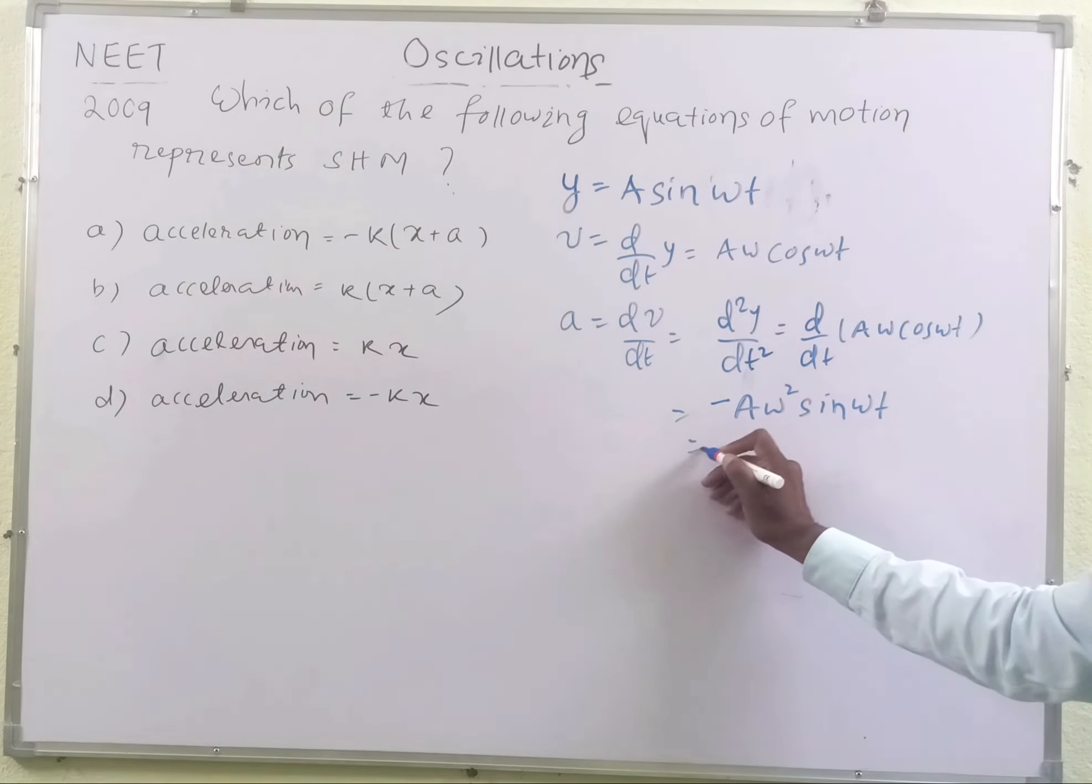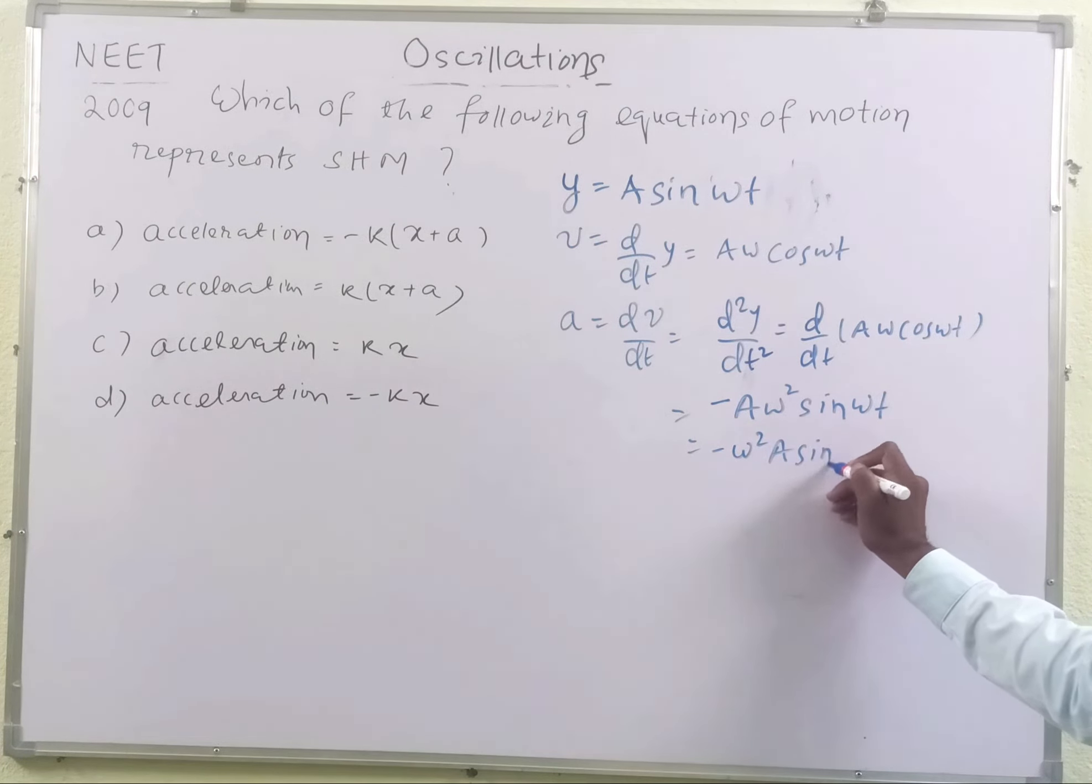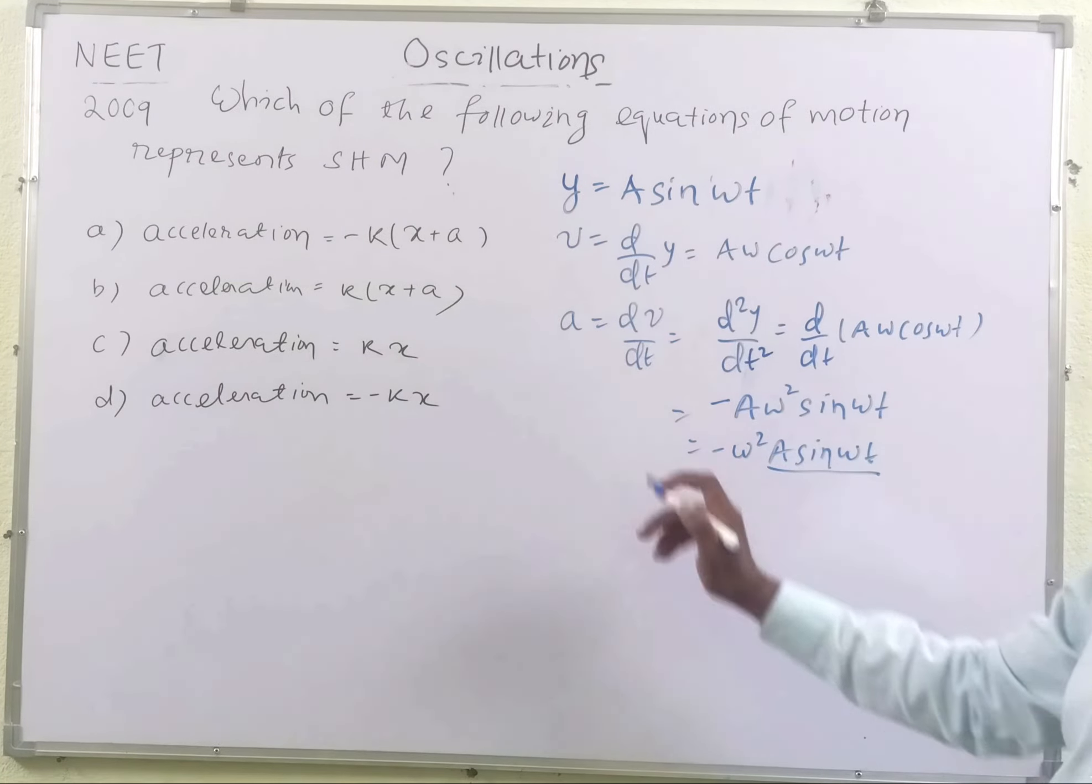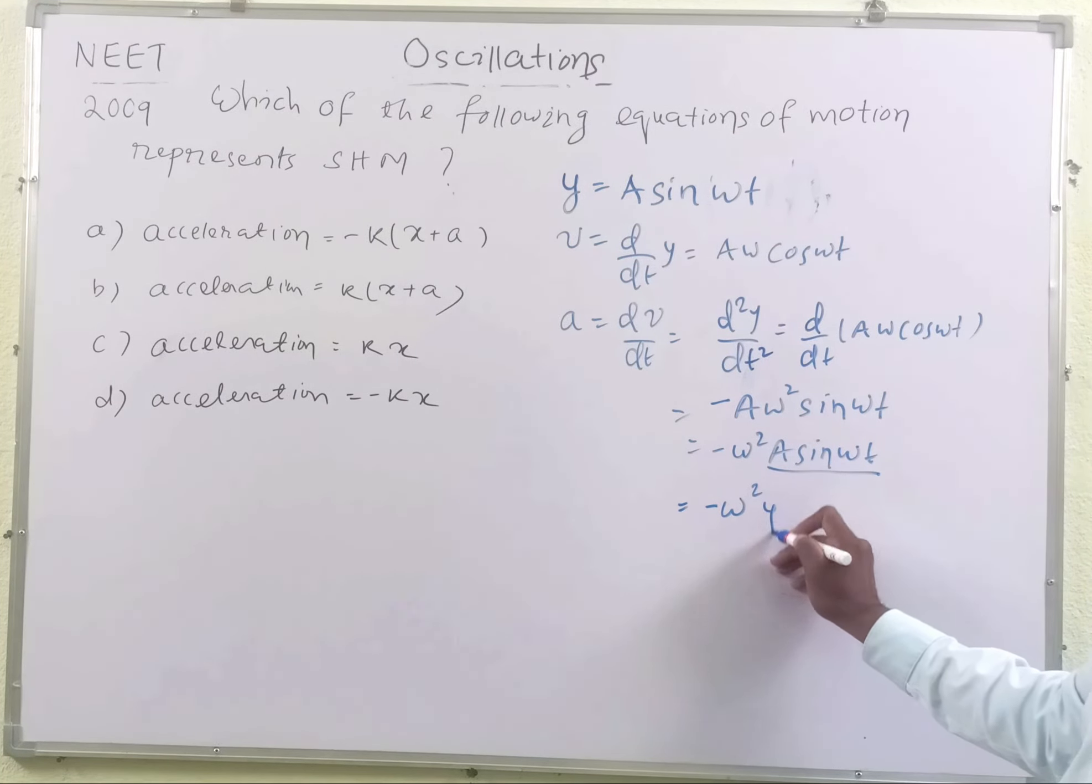This can be written as -ω²(A sin ωt). And what is A sin ωt? That is nothing but the displacement vector or the position vector. So we may write y for A sin ωt.